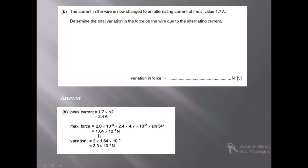We have to determine the total variation in the force on the wire due to the alternating current, so we multiply the maximum force by 2 and the variation is 3.3 × 10⁻⁴ newton. We multiply 1.64 × 10⁻⁴ by 2 because it is alternating current — there is a positive half cycle and a negative half cycle — so we multiply maximum force by 2 to determine the total variation in the force.